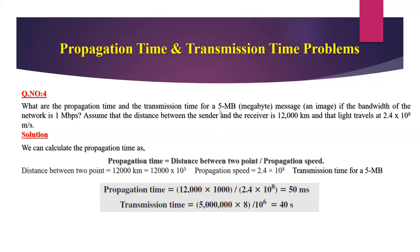Now for the transmission time: the message is 5 MB, so 5 × 10⁶ bytes. In the previous problem, 2.5 KB required multiplying by 1000 to get 2,500; here 5 MB means 5 × 10⁶. Multiply by 8 because one byte equals 8 bits. Divide by 10⁶ because bandwidth is 1 Mbps, represented as 10⁶. The final answer is 40 seconds.